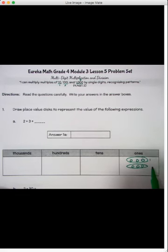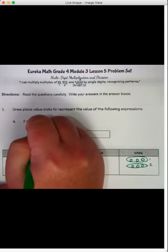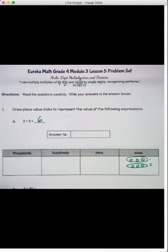So now we have one group of 3, and two groups of 3, and together they make 1, 2, 3, 4, 5, 6. So our answer is 2 times 3 is 6. So that was pretty easy.